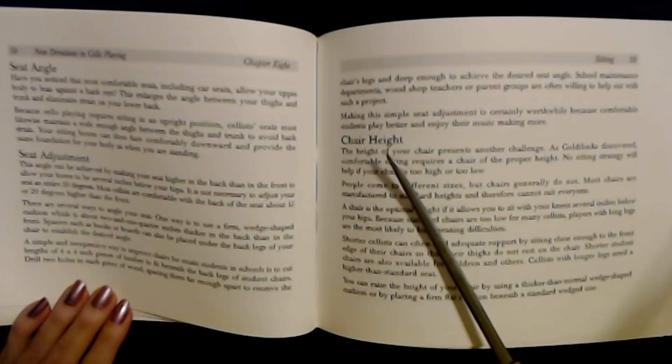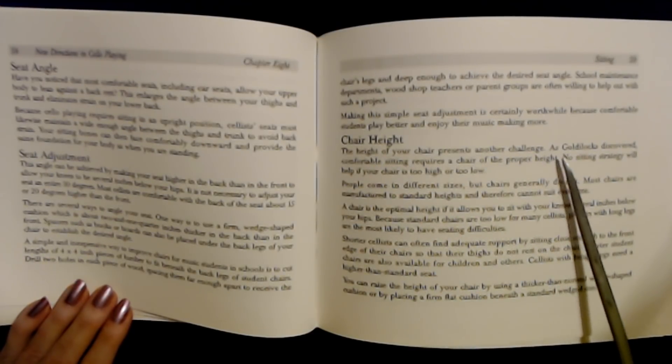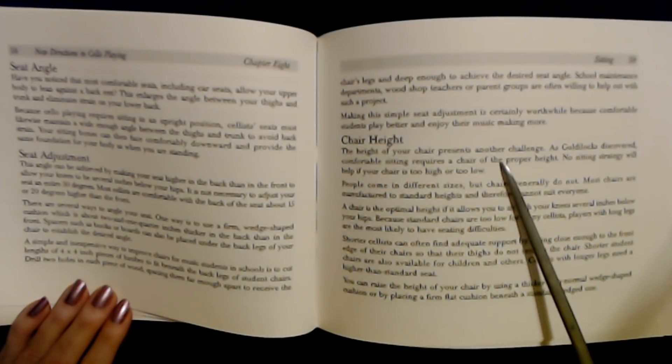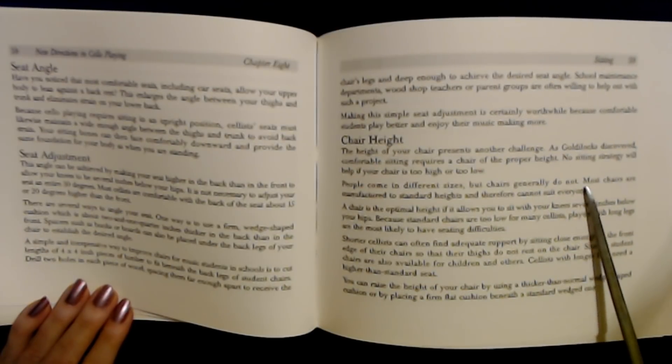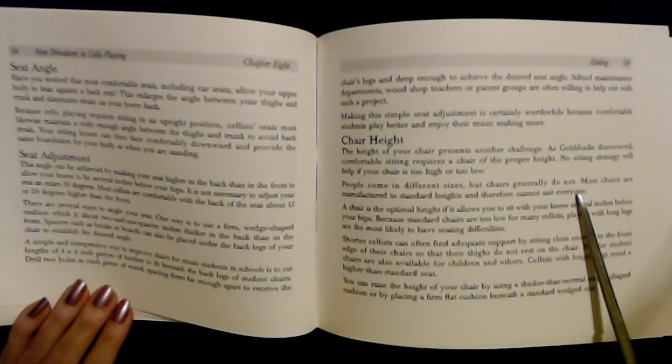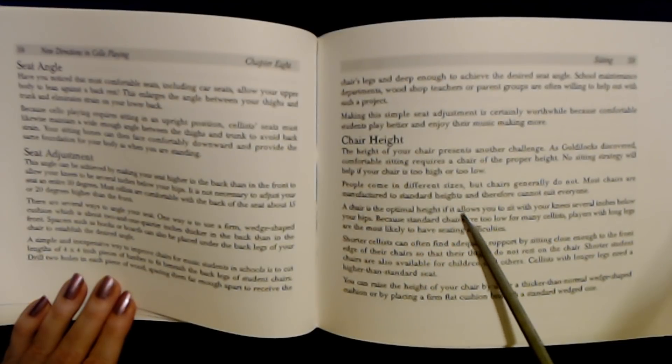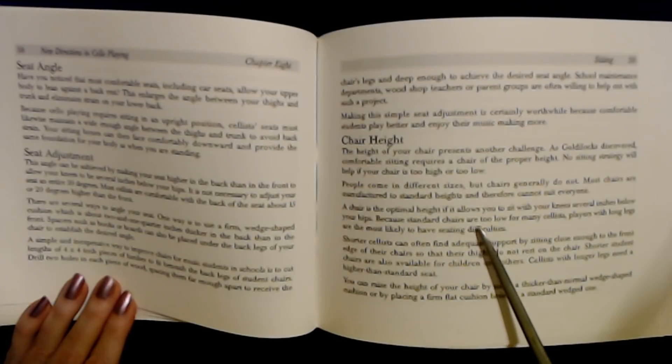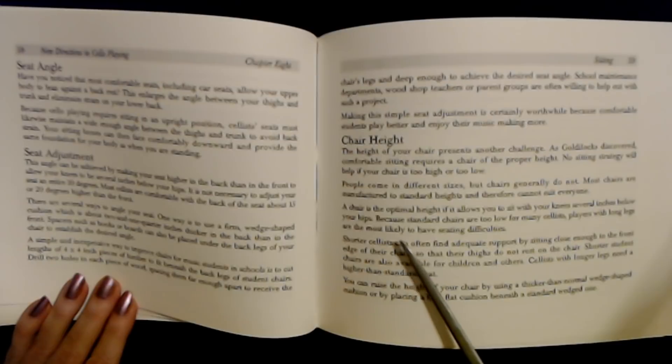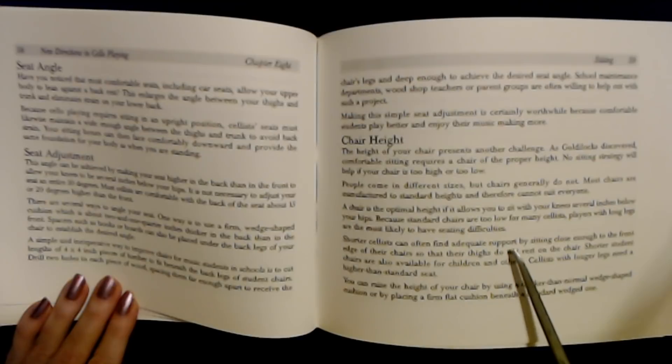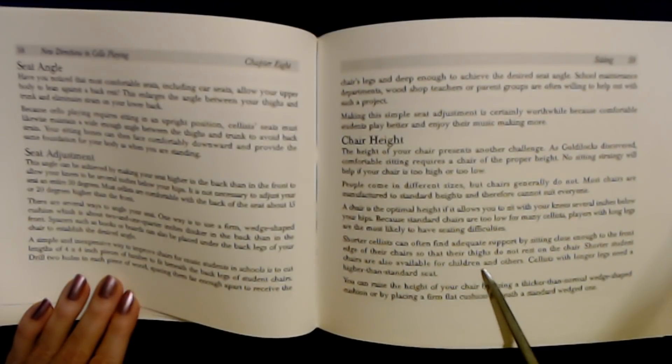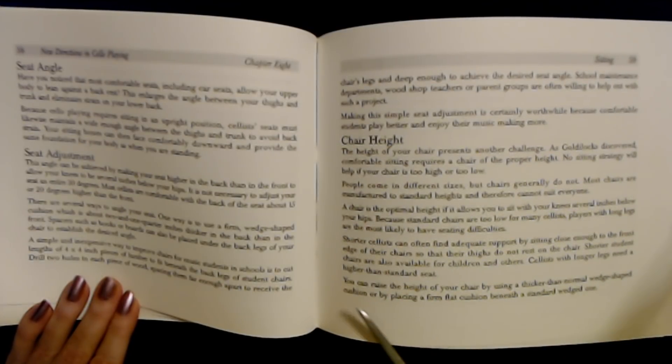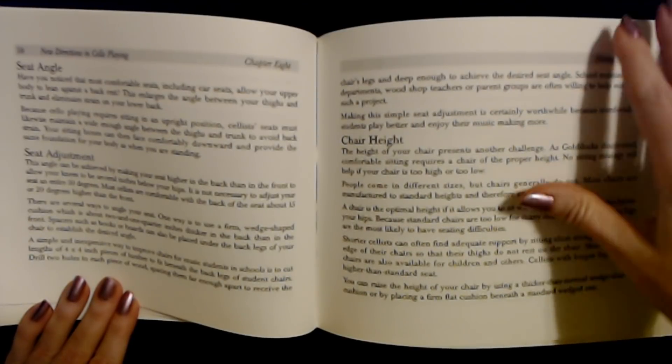Chair height. The height of your chair presents another challenge. As Goldilocks discovered, comfortable sitting requires a chair with the proper height. Sitting can be difficult for people with chairs that are too high or too low. People come in different sizes, but chairs generally do not. Most chairs are manufactured to a standard height, so they cannot suit everyone. A chair is the comfortable height if it allows you to sit with your knees at or slightly below your hips. Because standard chairs are too low for many cellists, players with long legs are most likely to have seating difficulties. Shorter cellists can compensate by sitting close enough to the front edge of the chair so their feet rest firmly on the floor. Shorter student chairs are also available for children. Cellists with longer legs need a higher than standard seat. This can be accomplished by using a thick cushion or by placing a firm flat cushion beneath a standard wedge cushion.